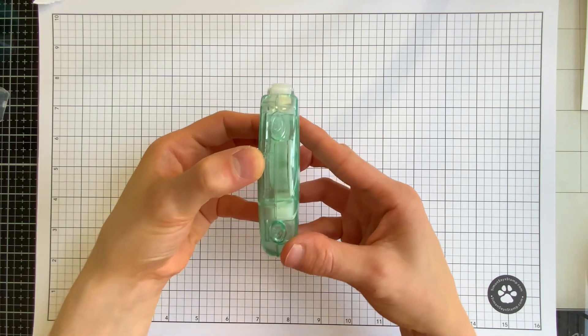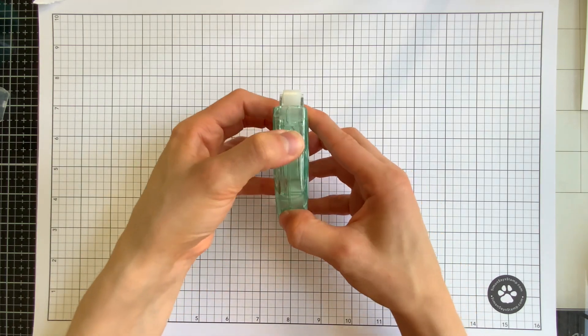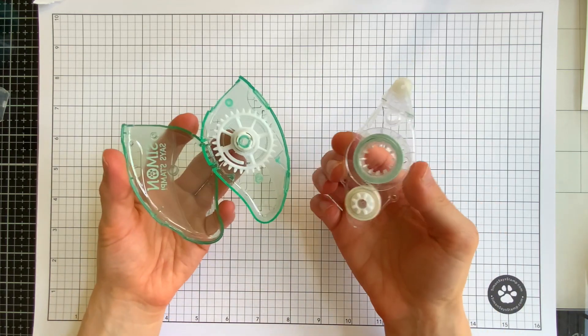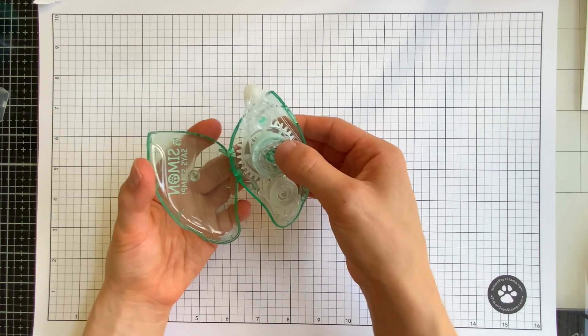All you have to do is press on the two smiley faces on the top and pull open. Then you can just remove the empty refill cartridge and replace it with a new one. Just like that, you're ready to continue crafting.